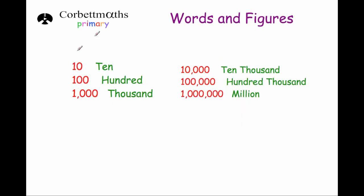Let's have a look at some other important numbers. So one followed by one zero, well that's ten. A one followed by two zeros, that's one hundred. A one followed by three zeros, that's one thousand. A one followed by four zeros, that's ten thousand. A one followed by five zeros is one hundred thousand. And a one followed by six zeros is one million.